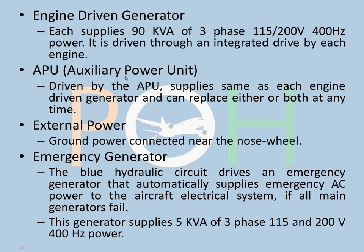APU — auxiliary power unit — also has a generator itself, driven by the APU. The supply is the same as the engine driven generator and it can replace either or both engine generators at any time. So in case an engine fails, the APU can take over.